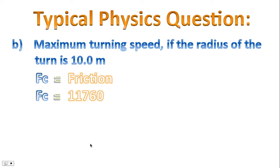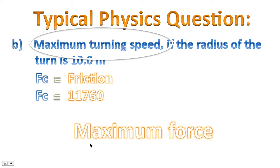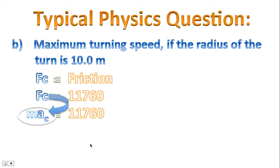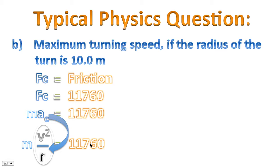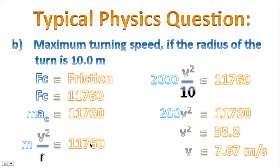We know the value of friction is 11,760 newtons. We use this value because the question asks for the maximum turning speed, so we use the maximum amount of force. Substituting our centripetal force statement — Fc equals Ma, just like Fnet equals Ma — and substituting centripetal acceleration as speed squared over turning radius, we make substitutions for mass and turning radius, divide 2000 by 10, then divide each side by 200. We end up with a maximum turning speed of 7.67 meters per second.